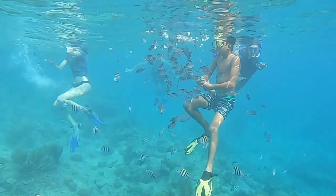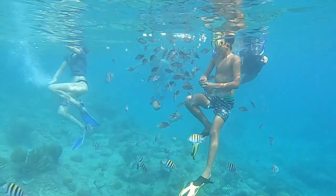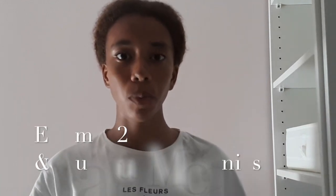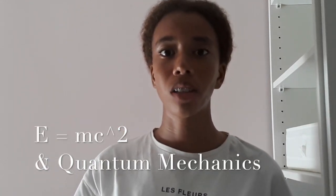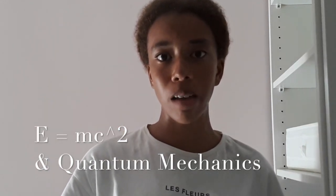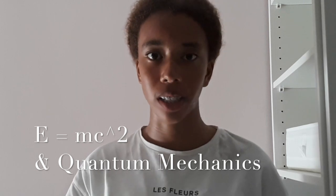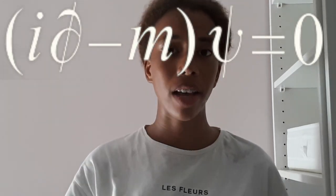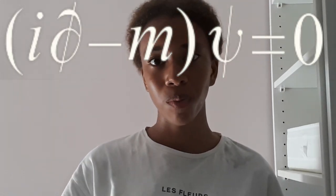But have you ever heard of anti-matter? In 1928, the English theoretical physicist Paul Dirac combined Einstein's special theory of relativity with quantum mechanics and came upon the Dirac equation. This equation characterizes the spin-half mass of particles.